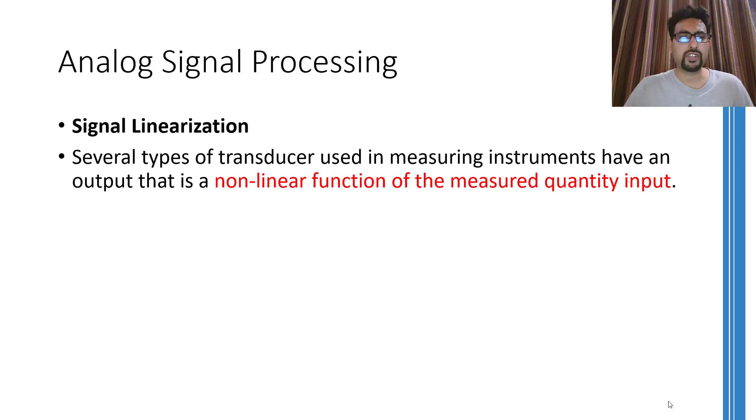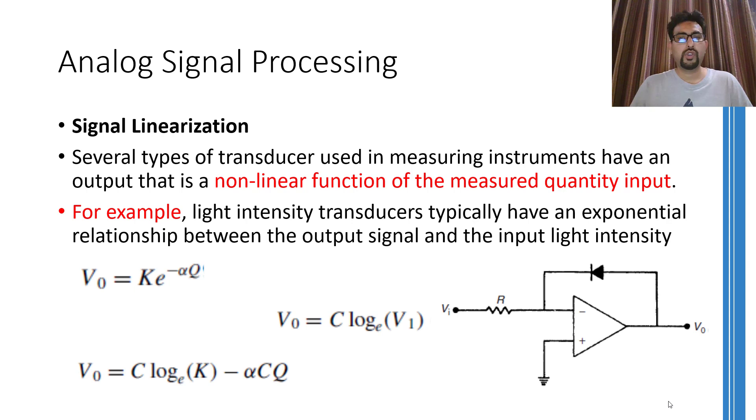We have talked about this problem that for automatic feedback control systems, a nonlinear output of the transducer is not an issue. But for human observations, a nonlinear output can cause serious problems. So the circuit shown over here can easily linearize an exponential signal. I won't be going into the mathematical details of how this result has been achieved and I will never ask you anything about it during evaluations as well, because it is not what this course is about.